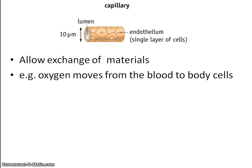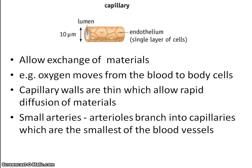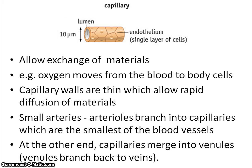We have mentioned capillaries. These are blood vessels as well. The job that they do is allowing the exchange of materials — for instance, oxygen moving from the blood to the cells for respiration. They are thin to allow diffusion of molecules. The large arteries become smaller and smaller; arterioles branch into capillaries. At the other end, the capillaries become larger, forming venules, and branch back to veins.